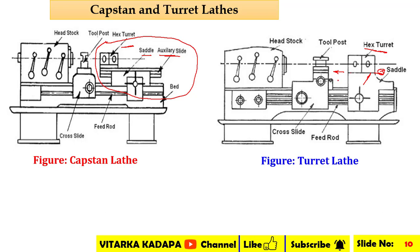The travel length of the tool in the turret lathe is almost the full length of the entire bed. Whereas in the case of the capstan lathe, the movement of the tool is restricted due to the auxiliary slide.